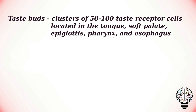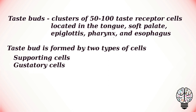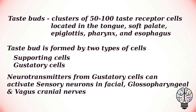The tongue is the main sensory organ of the gustatory system. The tongue contains papillae, or specialized epithelial cells, which have taste buds on their surface. Each taste bud has a flask-like shape and is formed by two types of cells: supporting cells and gustatory cells. The gustatory cells are sensitive to the chemicals present within ingested food and release neurotransmitters based on the amount of chemical present. These neurotransmitters can activate sensory neurons in the facial, glossopharyngeal and vagus cranial nerves.